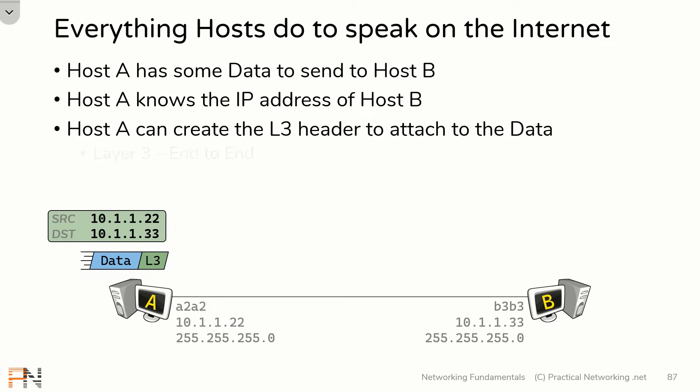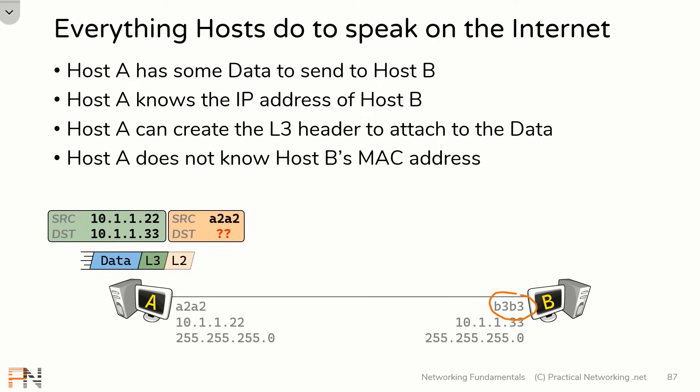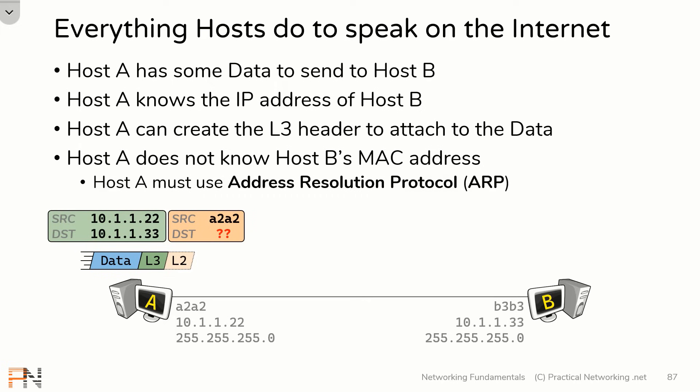The problem is that host A does not know host B's MAC address. If we look back at our example, many of you have used the ping command — you've typed ping and then an IP address — but you never typed ping, an IP address, and a MAC address. You only provided the IP address to the computer, and the computer figured out the MAC address on its own. That's exactly what host A is going to have to do. Host A is going to have to use the Address Resolution Protocol, or ARP, to resolve host B's MAC address. ARP is meant to link a layer 3 address to a particular layer 2 address.